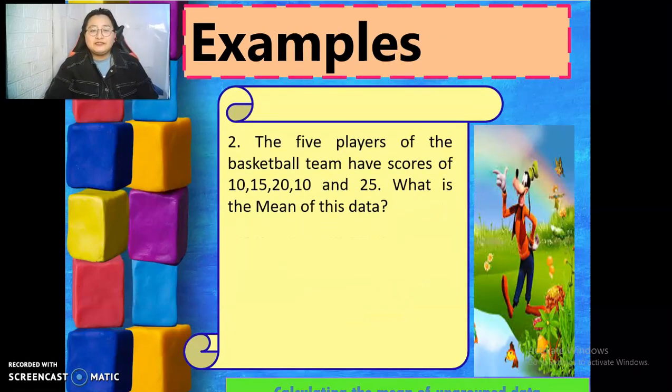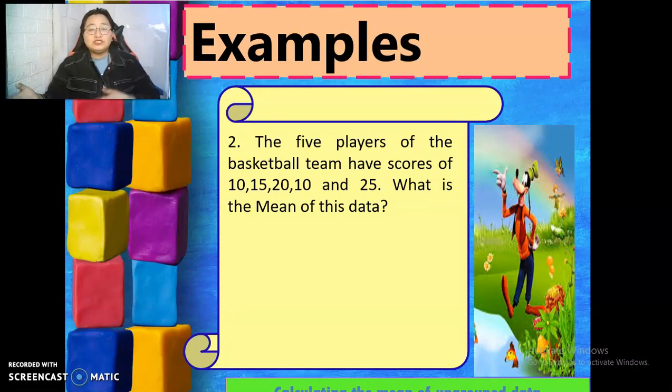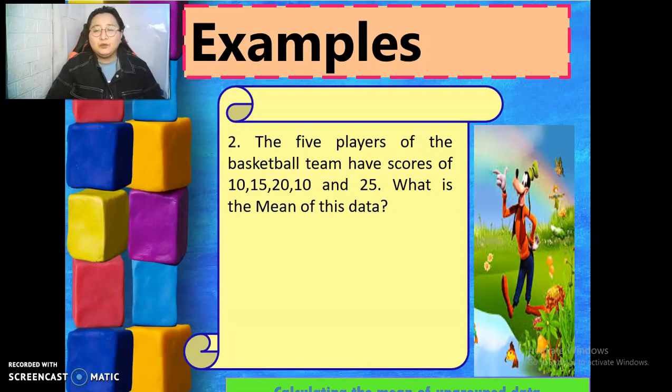Let's have some examples. The grade 7 students in math were 80, 81, 83, and 84. So to solve that, we have to analyze and substitute all these numbers to the equation we have, which is mean is equal to the sum of all data points divided by the number of data points.